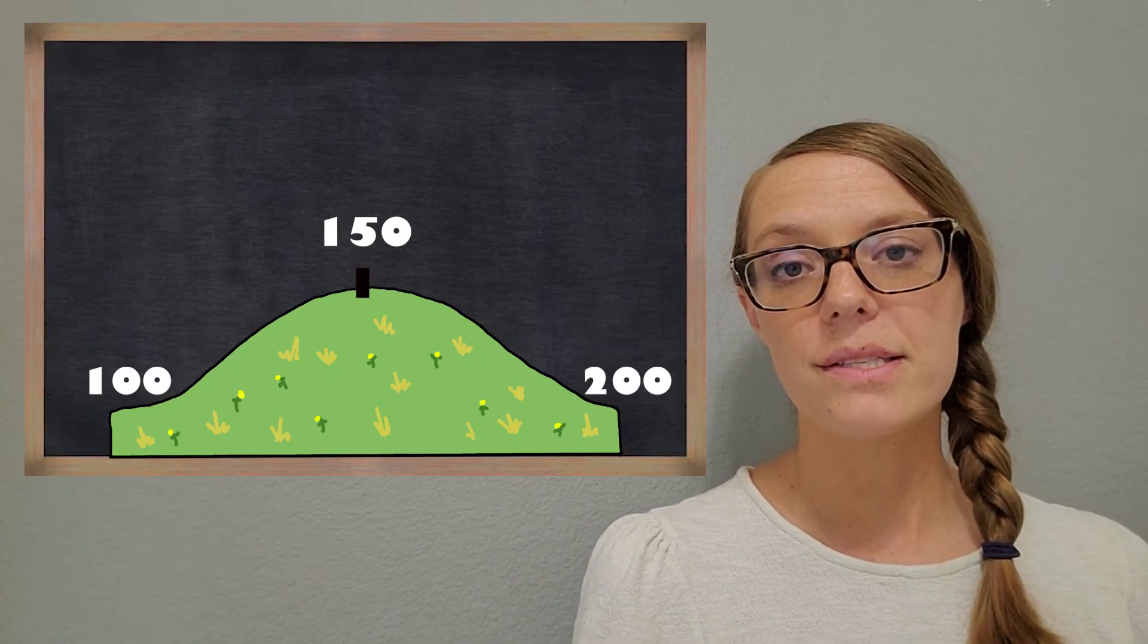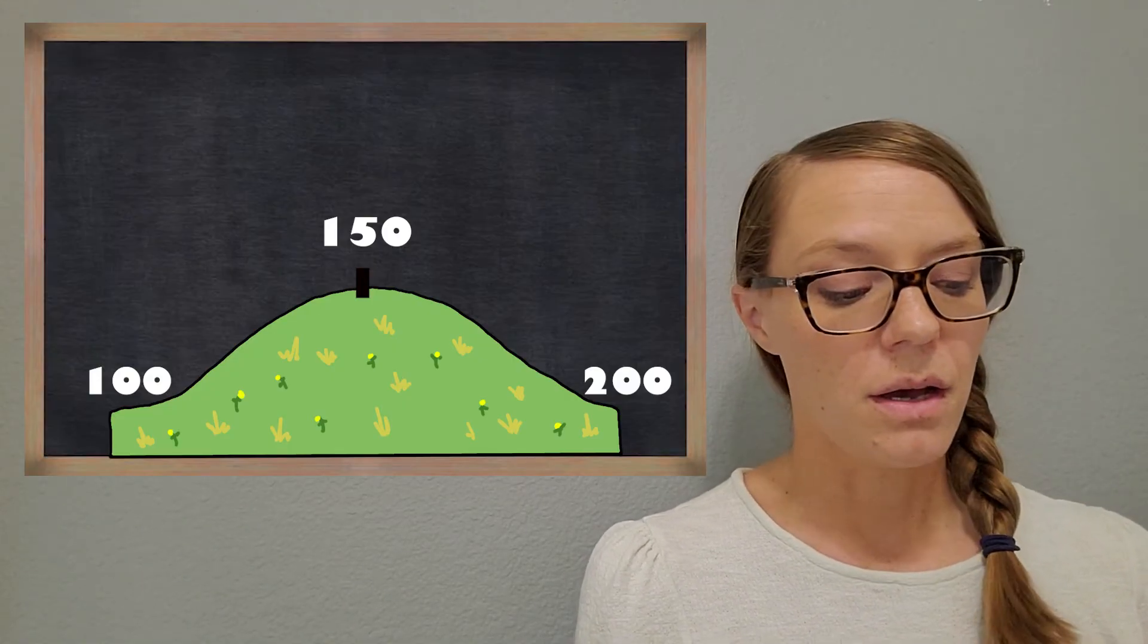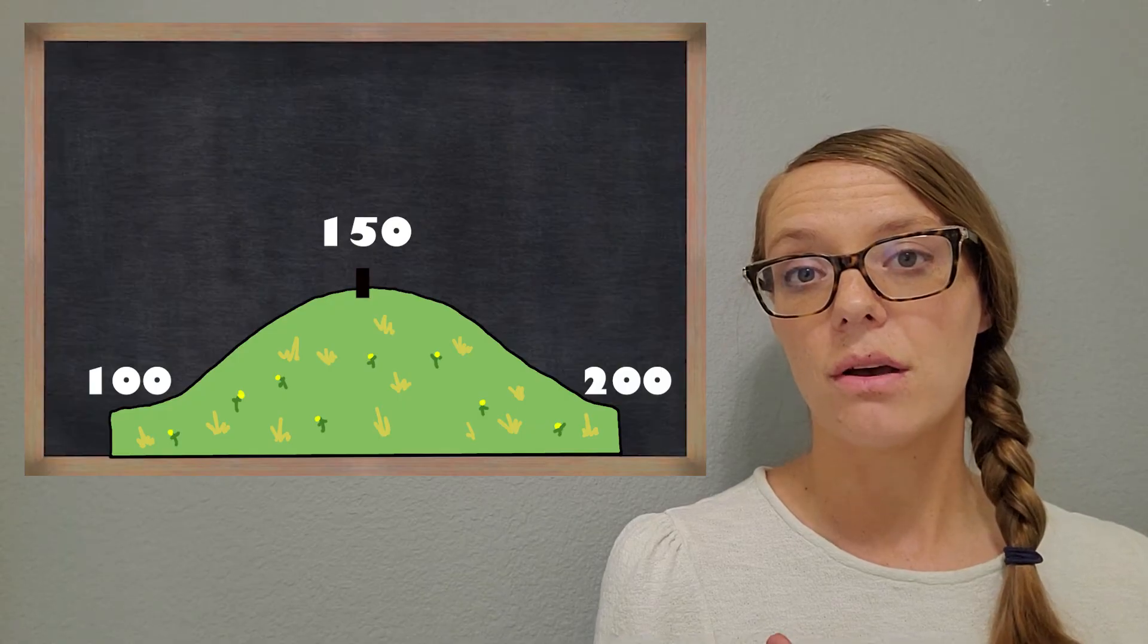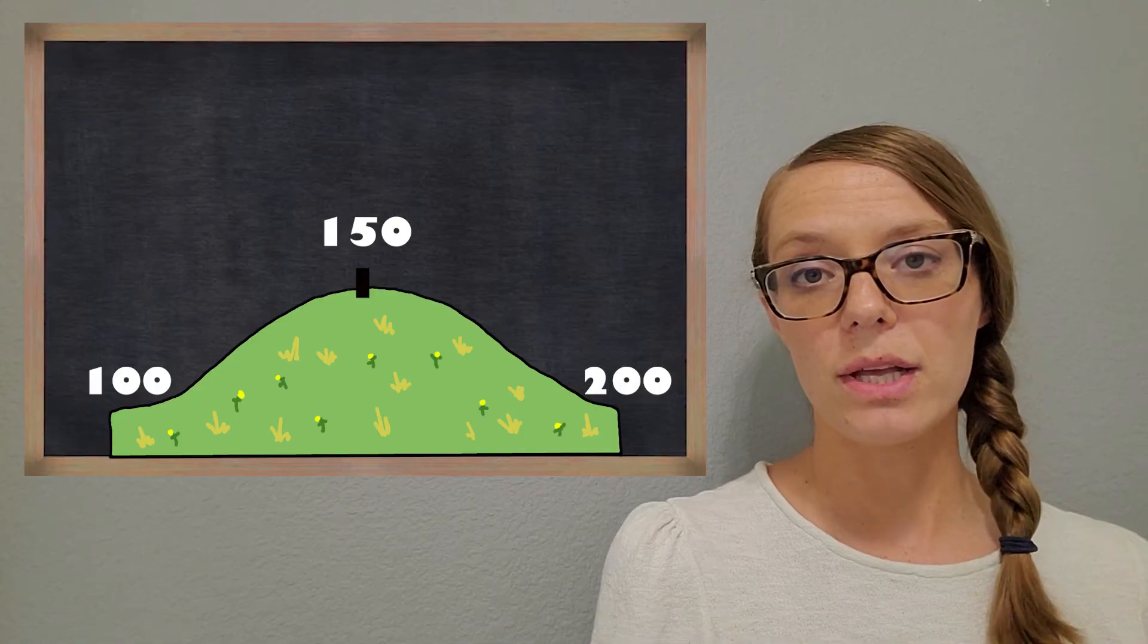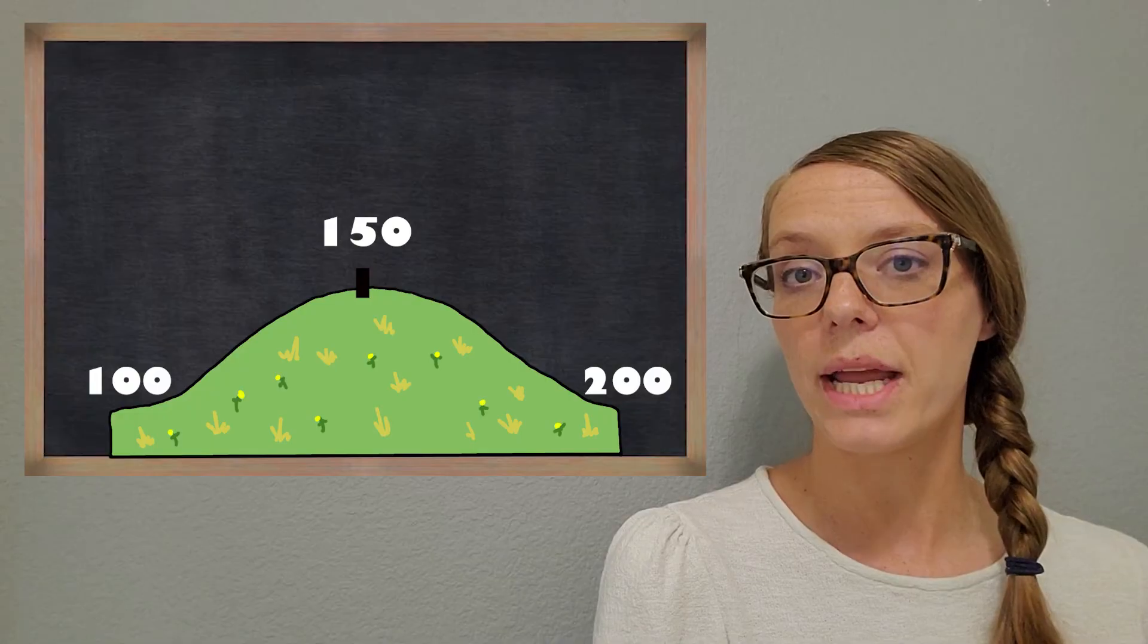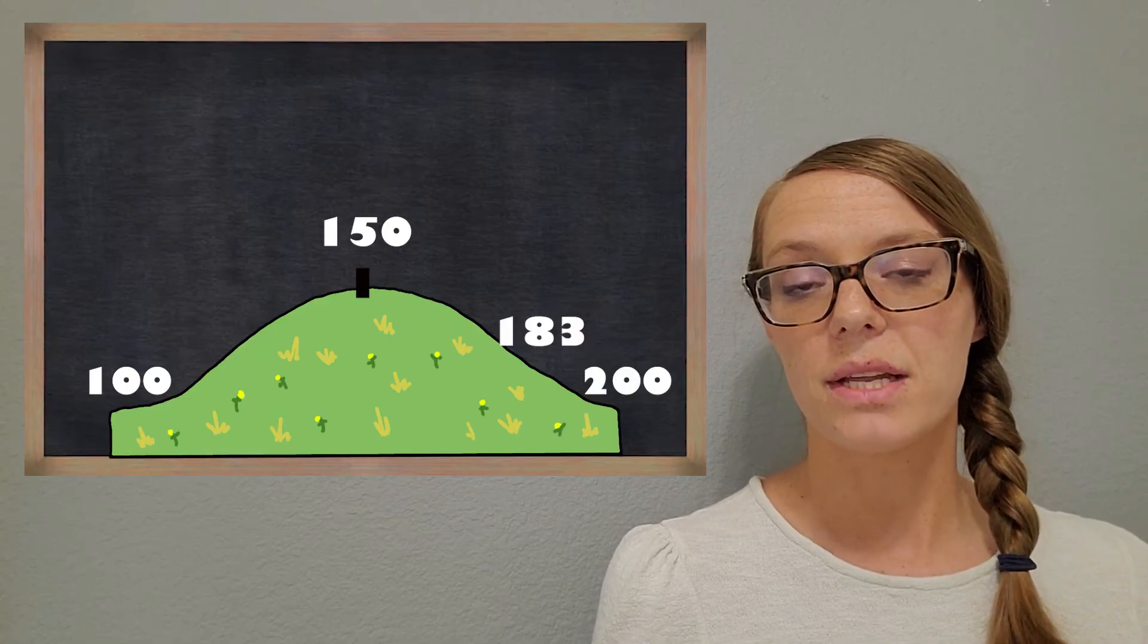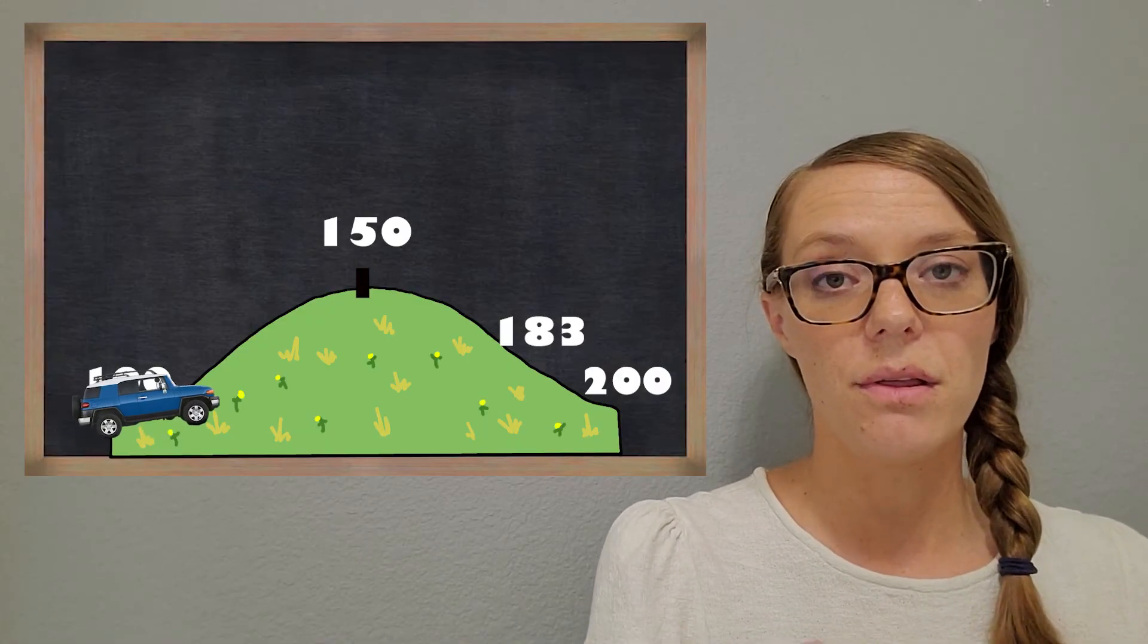Now let's go ahead and see if we can round to the nearest hundred this time. Let's try 183. So first thing to do is just to locate that on the hill or number line. And it doesn't have to be perfectly in the right spot. Just get it around where you think 183 would go. Now, what do you think? We can pretend like we're in the car again, starting at 100, driving up the hill.